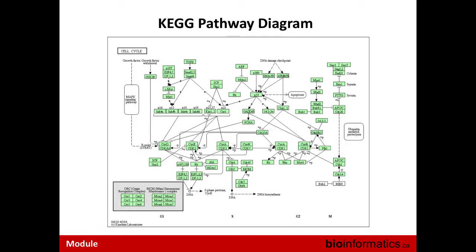A typical KEGG pathway diagram shows individual proteins or complexes consisting of multiple proteins, the reactions they participate in, and their positive and negative relationships — very similar to what was described earlier.